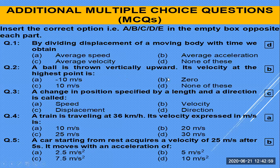When a ball is thrown vertically upward, its velocity at the highest point is zero. So option B is the correct answer. The change in position specified by a length and a direction is called displacement.